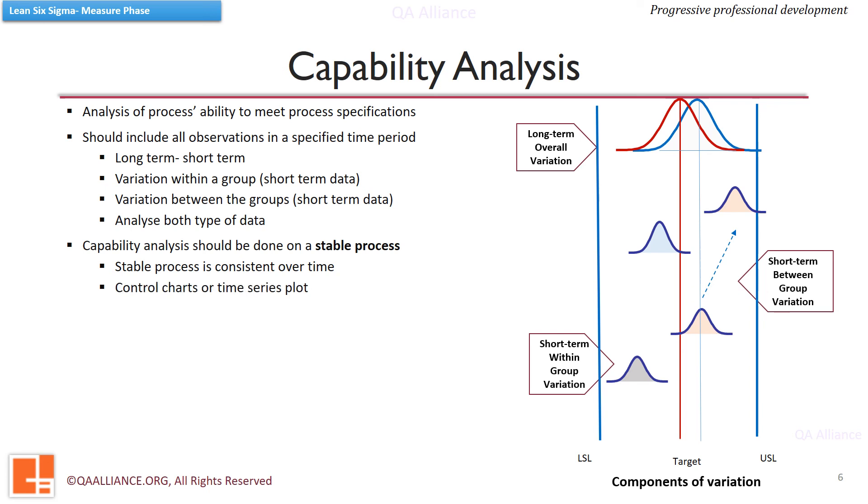We make use of control charts and time series plot to check the stability of the process. In next lesson we'll learn how do we do capability analysis. Though we should know that the capability analysis helps us calculate the sigma level of the process, as it compares voice of process with voice of customer.